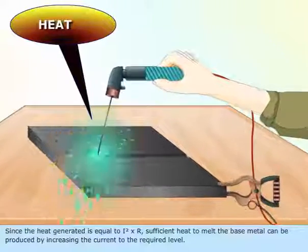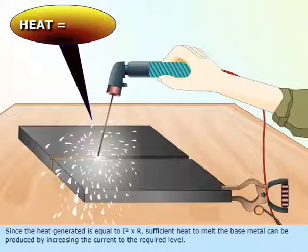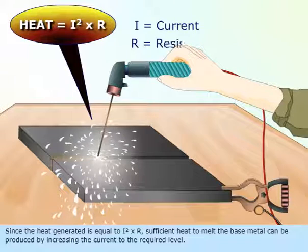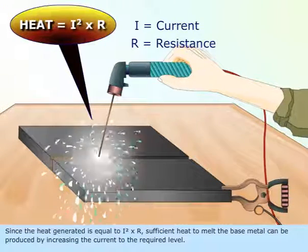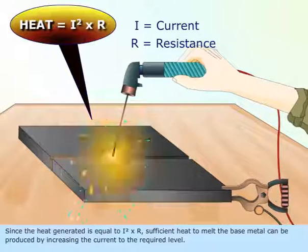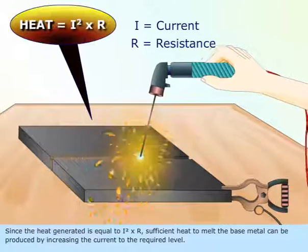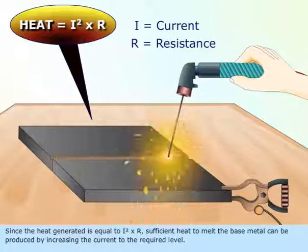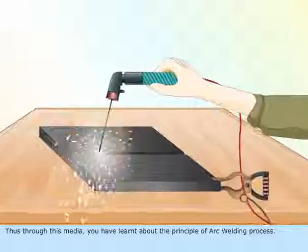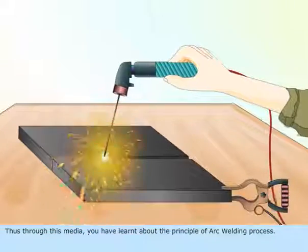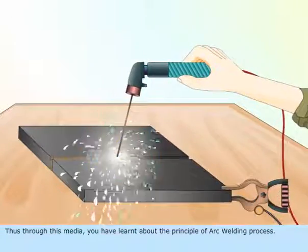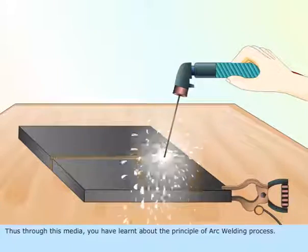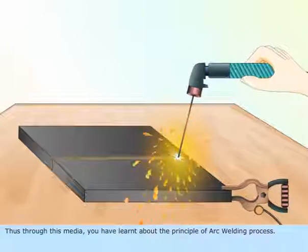Since the heat generated is equal to I squared into R, sufficient heat to melt the base metal can be produced by increasing the current to the required level. Thus through this media, you have learnt about the principle of arc welding process.